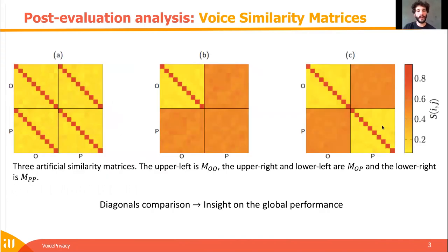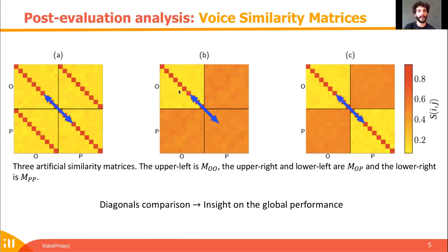Here are three artificial examples, and for each case we have MOO, MOP, and MPP. To check the de-identification, we can watch how much the diagonal disappears from MOO to MOP. And to check the voice distinctiveness preservation, we can watch how much the diagonal dominance remains the same from MOO to MPP. The best case is case C because we have both de-identification and voice distinctiveness preservation. By comparing the dominance of the diagonals between the matrices, we can have an insight on the global performance of a system.